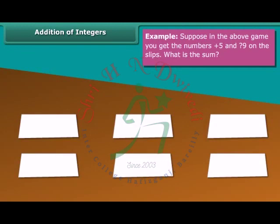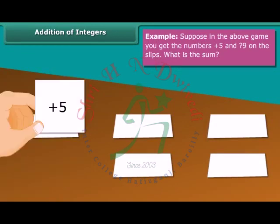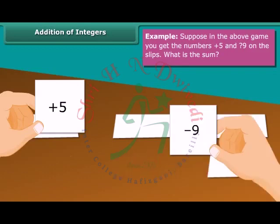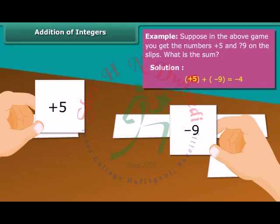Addition of two integers. Example: Suppose in the above game, you get the numbers plus 5 and minus 9 on the slips. What is the sum? Plus 5 plus minus 9 which is equal to minus 4.